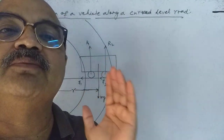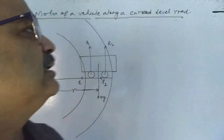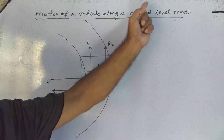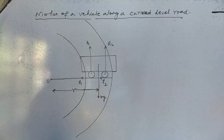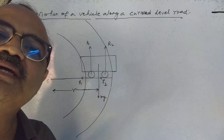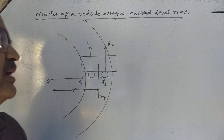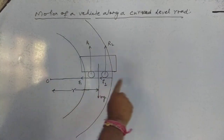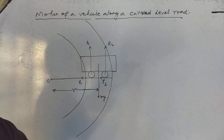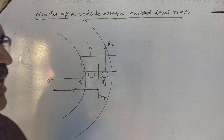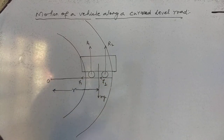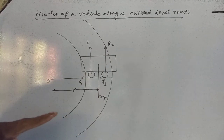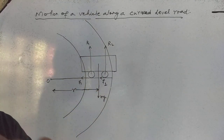Keeping those things in mind, today's discussion is about the motion of a vehicle on a curved level road — a very practical situation. Suppose there is a curved level road, meaning a completely horizontal road, and on that road a vehicle is moving and is at a turning.